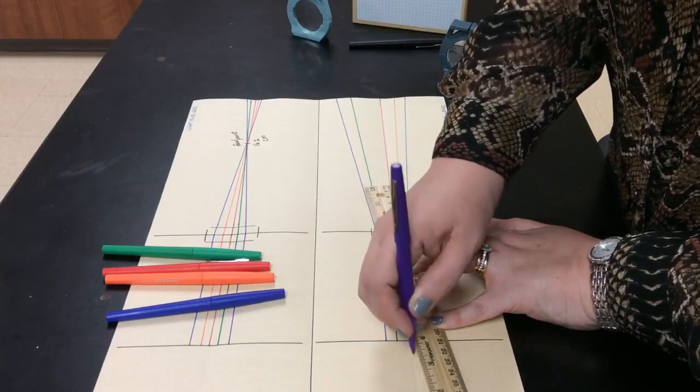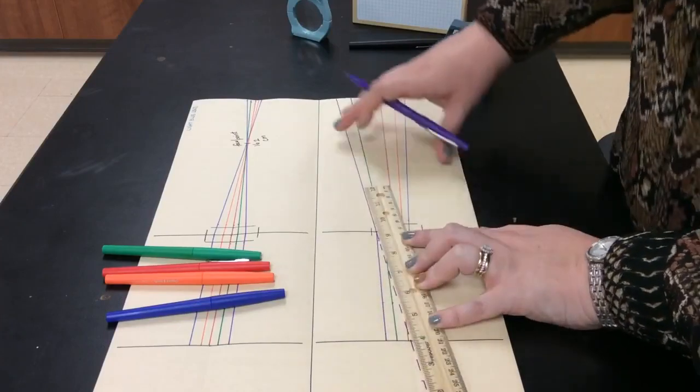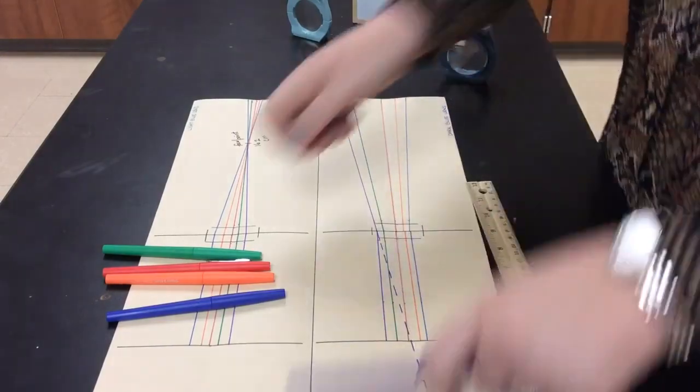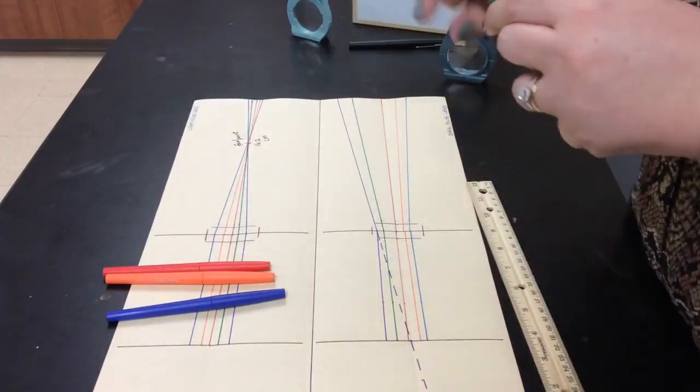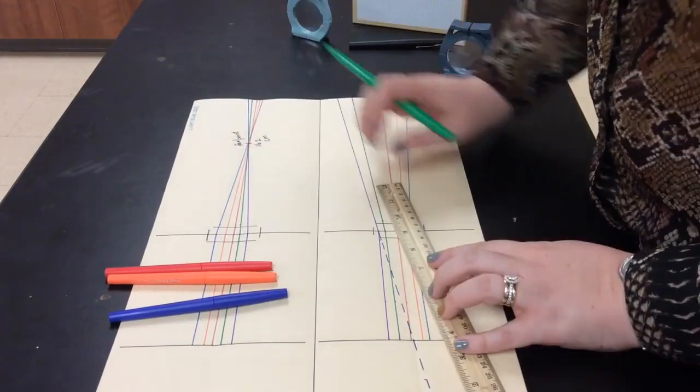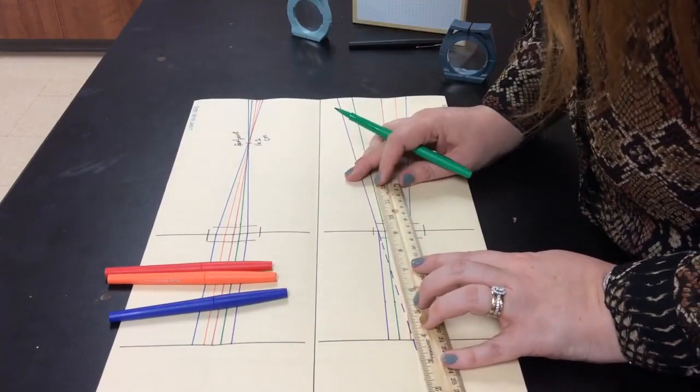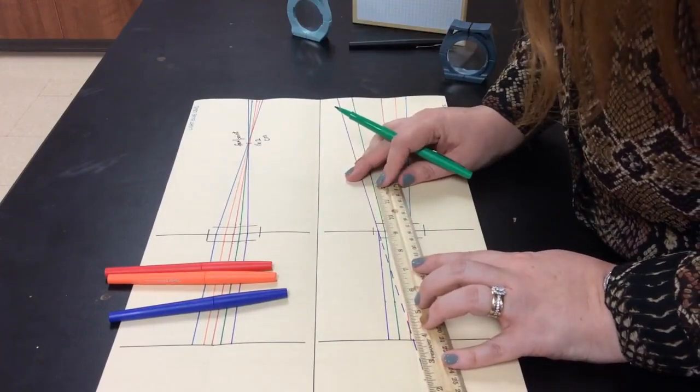You don't necessarily have to do it that way. I just like to make sure that everything is clear. So you see I'm going to trace it all the way back to the edge of the paper. So there's one. I'll try and do this quickly.